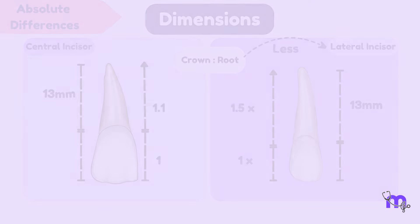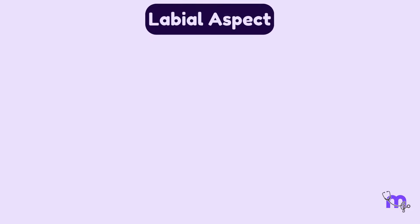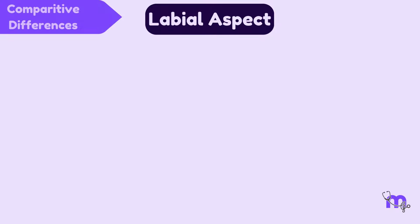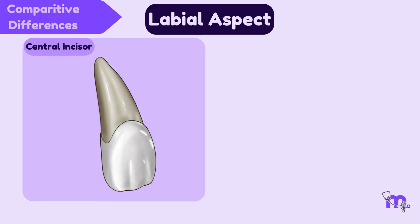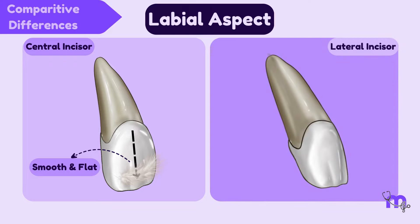Let us now focus on the labial aspect of these teeth. Under the comparative differences, the labial surface of a maxillary central incisor appears smooth and relatively flat when compared to the lateral incisor, which exhibits a more pronounced convex or rounded surface.